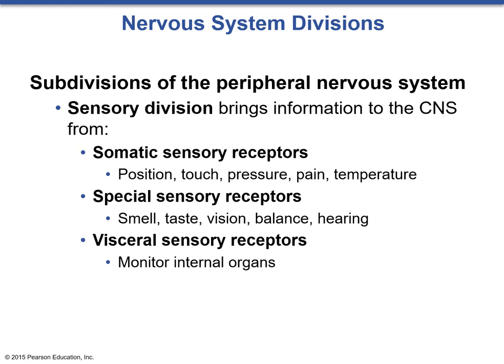Somatic refers to the body — position, touch, pressure, pain, and temperature. We tend to be much more consciously aware of somatic sensory receptors. Visceral sensory receptors contrast with somatic in that they monitor the internal organs — things you might not even be aware of, such as the distension of your stomach, blood pressure increases, and the overall chemical composition of your blood. These visceral sensory receptors are always working, but you're just not aware of them.